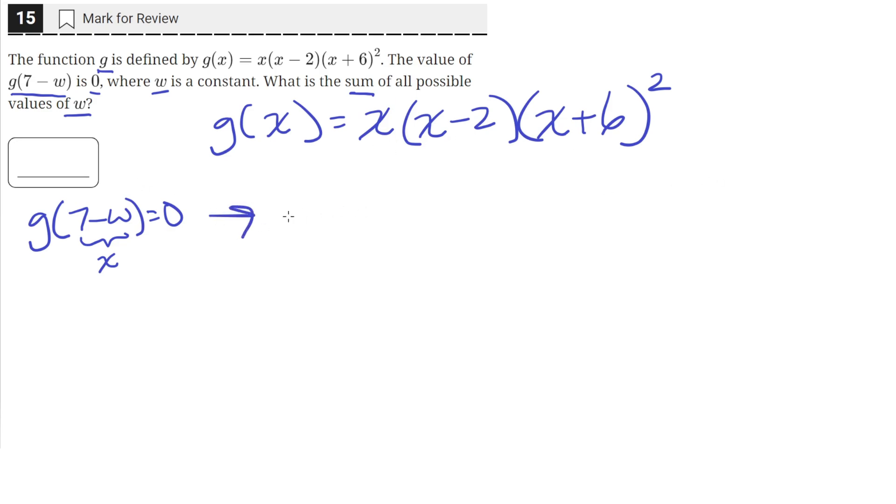So let's do that here. So g of 7 minus w is equal to this expression, but with x being substituted for 7 minus w. So we would have 7 minus w times 7 minus w minus 2 times 7 minus w plus 6, all squared. And we are told that this whole quantity equals 0, since g of 7 minus w equals 0.